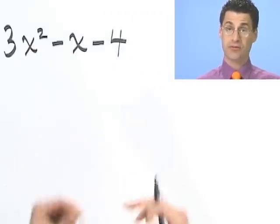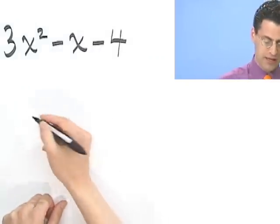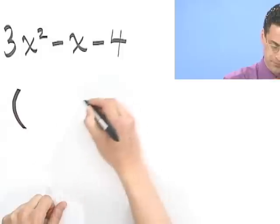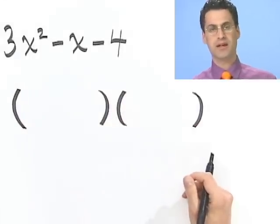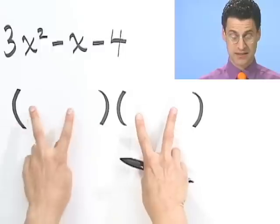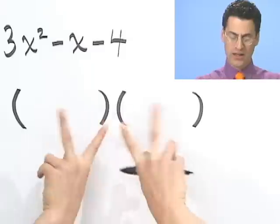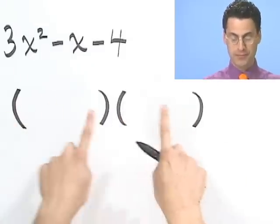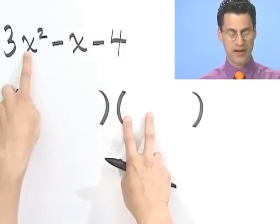Let's see if we can try to factor this. It would have two pieces if it were factorable, and these are both going to be binomials — two pieces to each. I want those two pieces to have the property that when I FOIL it all out, it equals this. The first two terms here, I'd want them to be 3x squared.